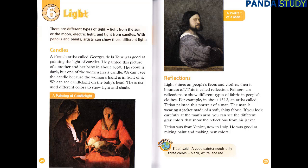There are different types of light: light from the sun or the moon, electric light, and light from candles. With pencils and paints, artists can show these different lights. A French artist called Georges de Latour was good at painting the light of candles. He painted this picture of a mother and her baby in about 1650. The room is dark, but one of the women has a candle. We can't see the candle because the woman's hand is in front of it. We can see candle light on the baby's head — the artist used different colours to show light and shade.